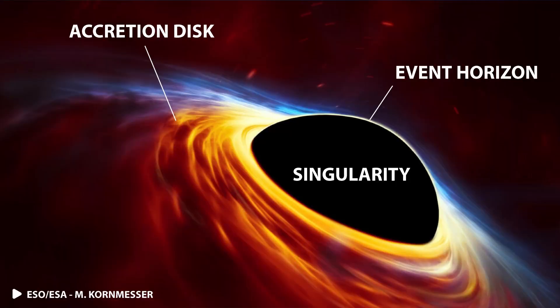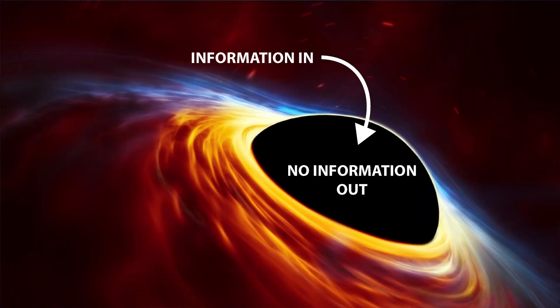First, how can we make something that replicates an event horizon? Well, once we recognize that an event horizon is an information boundary, we can see that there might be many ways in which we can replicate this. To make a black hole event horizon, you need to have a boundary that can send information in, but can't get information out.